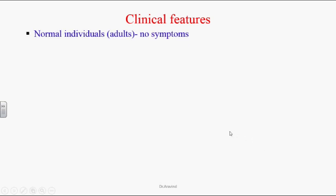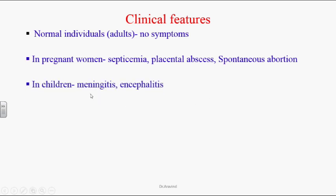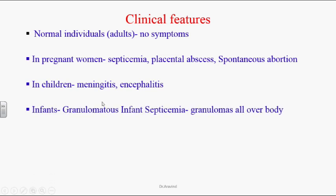Clinical Features: In normal individuals, no symptoms are seen because they are immunocompetent. In pregnant women, Listeria infection can cause septicemia, placental abscess, and spontaneous abortion. In children, it can lead to meningitis and encephalitis. In infants born from an infected mother, we can see granulomatous infantile septicemia, where granulomas are present all over the body.